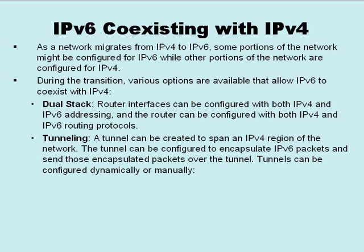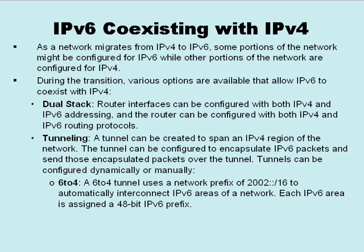The dynamic approach is called a 6-to-4 tunnel, using a network prefix of 2002::/16. This approach can automatically interconnect IPv6 areas of the network, where each IPv6 area is assigned a 48-bit IPv6 prefix. In addition to the 2002 prefix (16 bits), the remaining 32 bits can be taken automatically from the underlying IPv4 address, giving us our 48-bit IPv6 prefix.